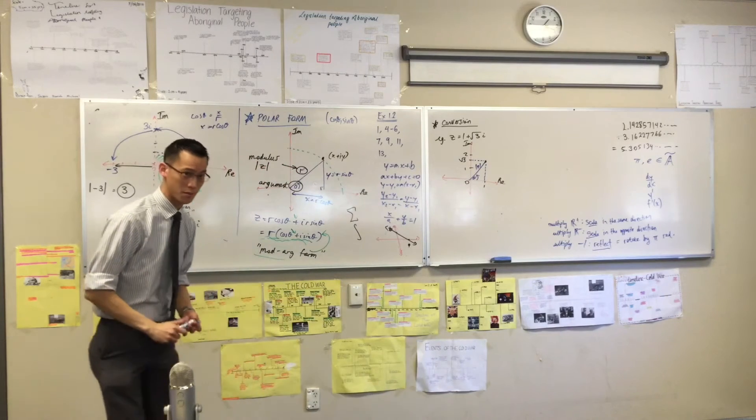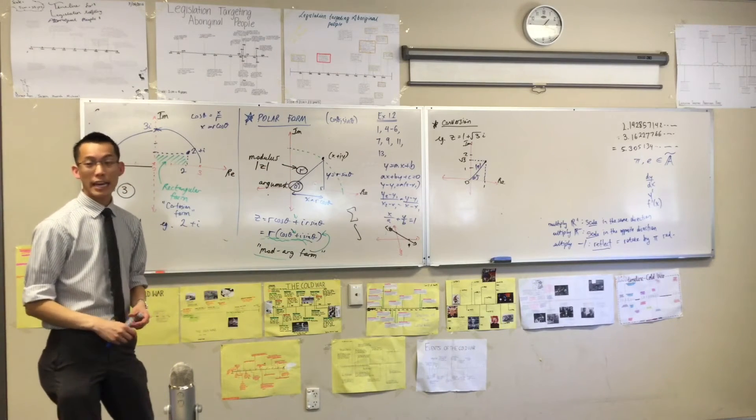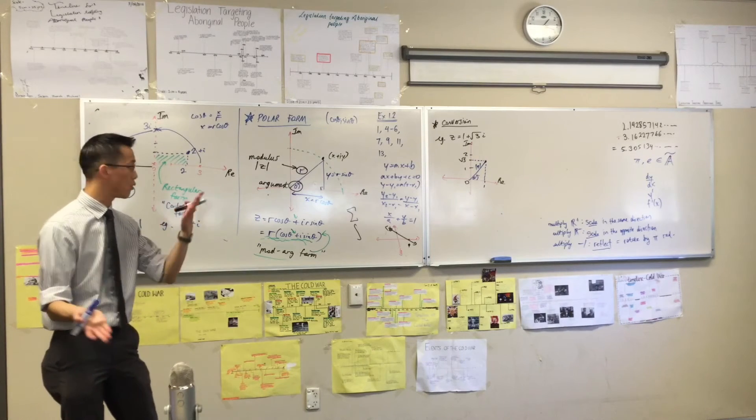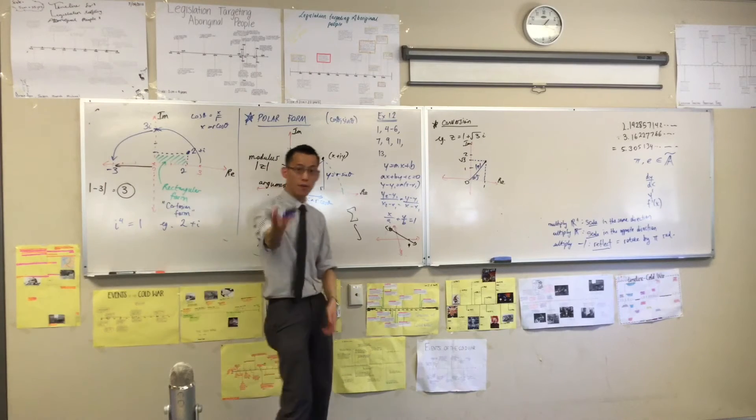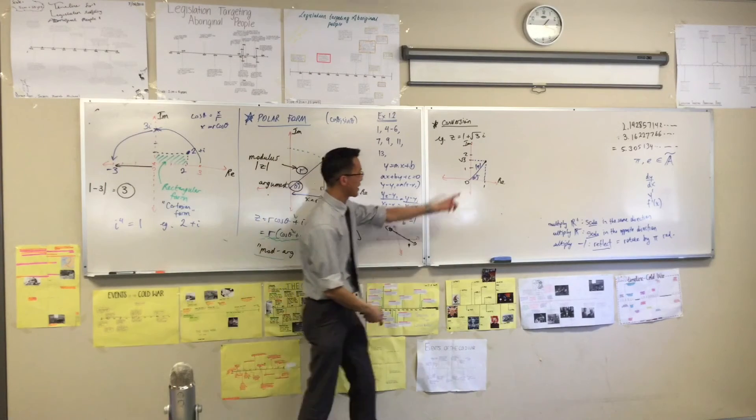I need this guy, what's it called again? The modulus. And then I need the other piece, which is the argument. So that's the angle measured up from the real axis. There it is there. How am I going to do this? Any suggestions?